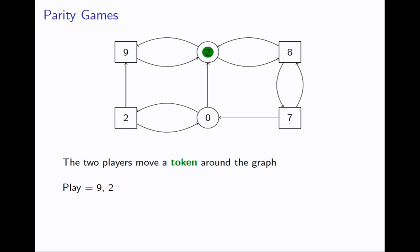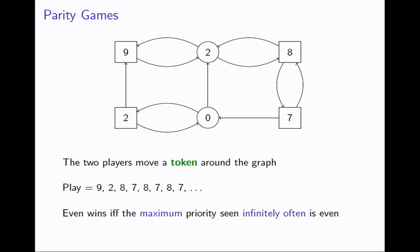Player odd can either move the token back or further to the right. In this way, the two players create an infinite path, and what we're interested in is the infinite sequence of priorities the players construct. We look at the maximum priority that is seen infinitely often — the maximum priority seen finitely often is nine, but the one seen infinitely often is eight — and we look at the parity of that number. If it's even, player even wins; if it's odd, player odd wins.